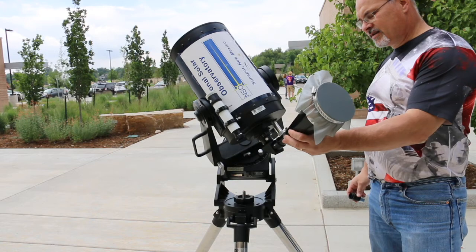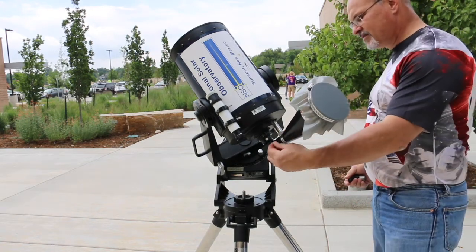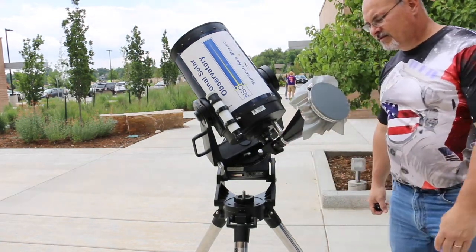With your telescope not pointing at or near the sun, insert the sun funnel's eyepiece barrel into the one and a quarter inch eyepiece holder and secure it with thumb screws. Then go ahead and aim your telescope at the sun.